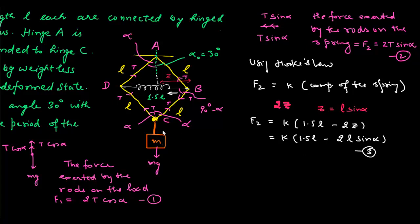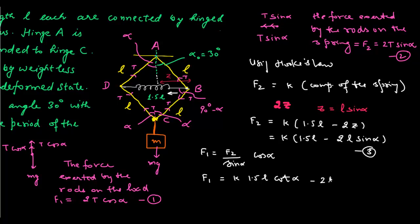To find the time period we need the force F1 acting on mass M. We eliminate T using equation 2: F1 = (F2 / sin(alpha)) × cos(alpha). Substituting the value of F2 from equation 3, we get F1 = K·(1.5L·cot(alpha) − 2L·cos(alpha)) — this is equation 4.